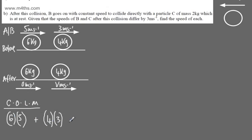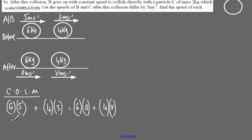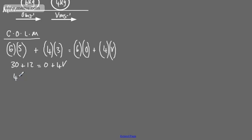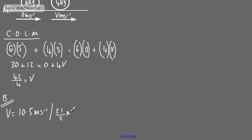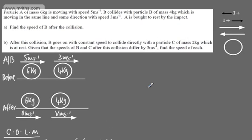This is the total momentum before the collision. Afterwards, we have 6 × 0 plus 4 × V. Solving: 30 + 12 = 0 + 4V, so 42 = 4V, giving V = 42/4 = 10.5 meters per second, or 21/2 meters per second. We've used conservation of linear momentum to find that value.